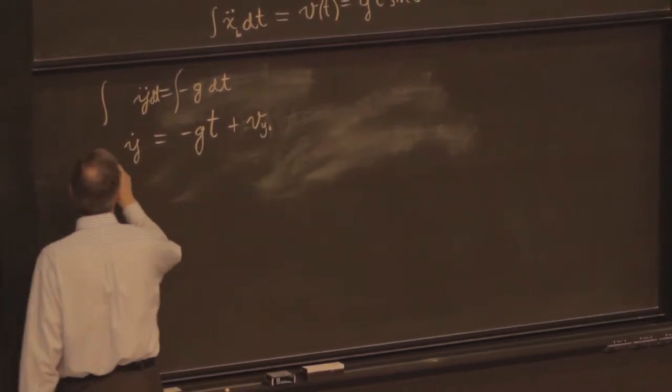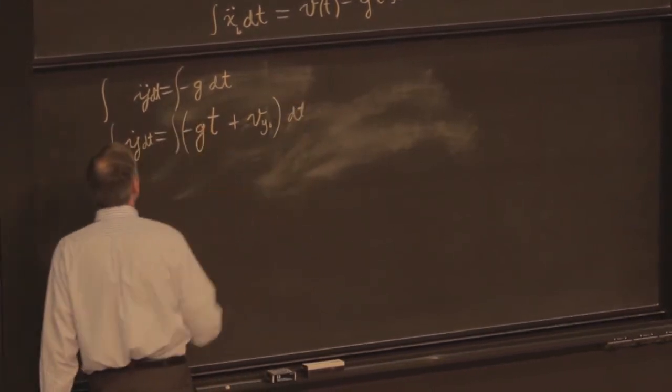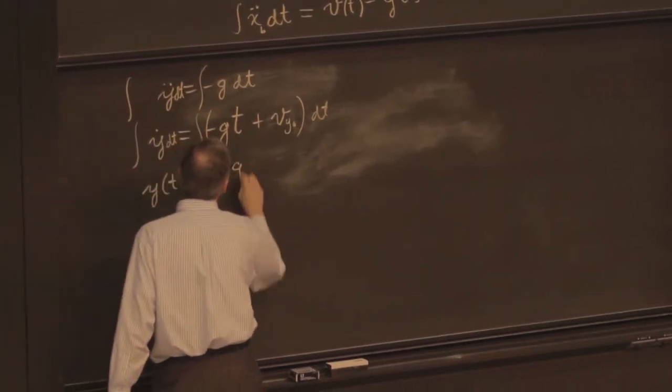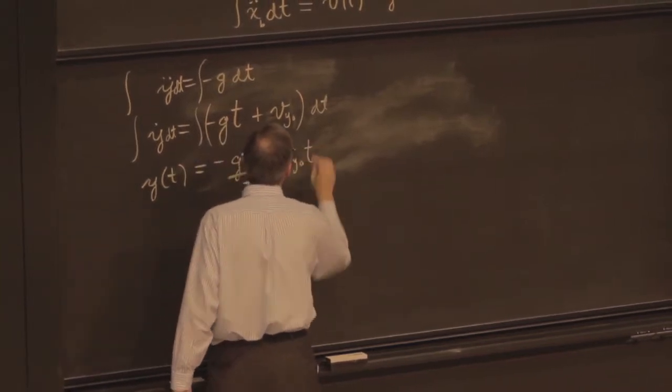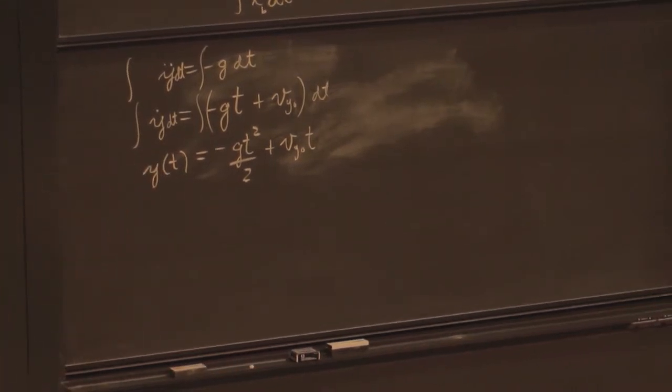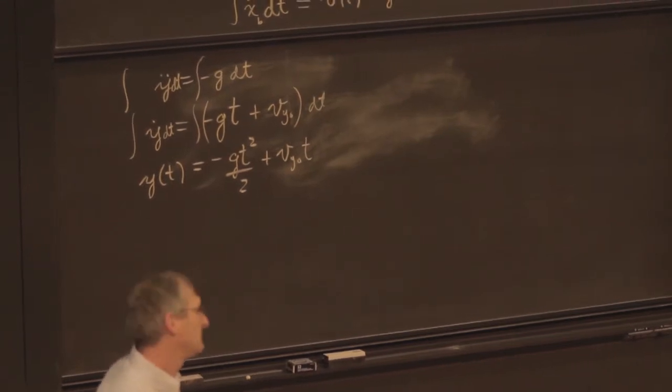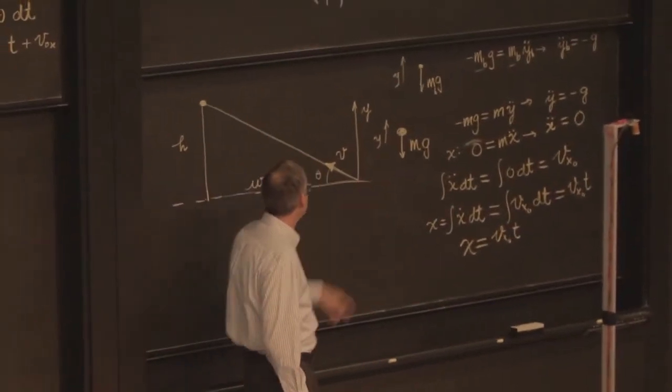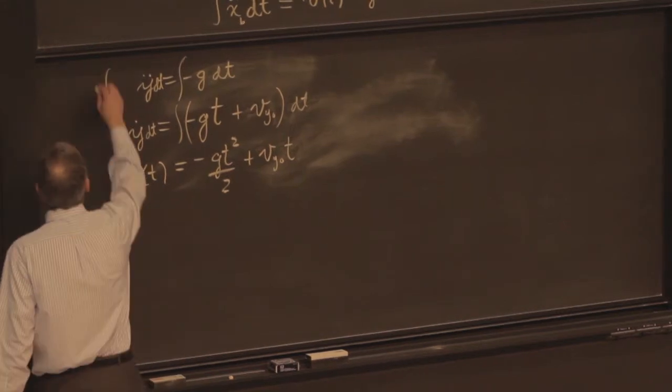I integrate again with respect to time. And I get y is equal to minus g t squared over 2 plus v y0 t plus whatever y position the ball had at time t equals 0. What is that? 0. That's where we're measuring from. We're measuring from here. And so that's where the tennis ball leaves at time 0. So I got 0. So this is for the tennis ball.